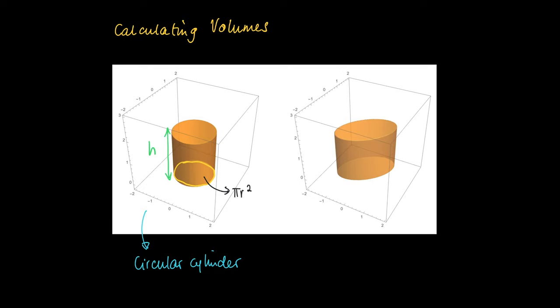The volume of this circular cylinder is calculated by finding the ground surface, which is πr² when r is the radius of the circle, times h. So the volume is given by πr² times h.